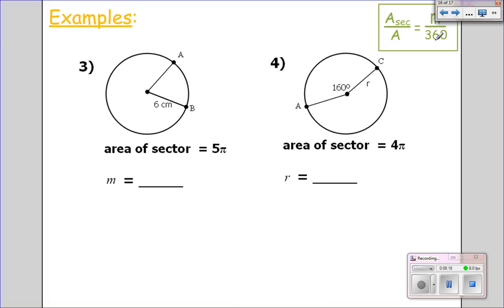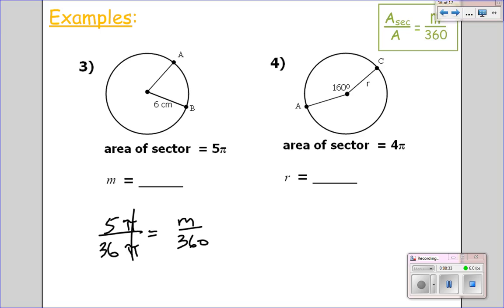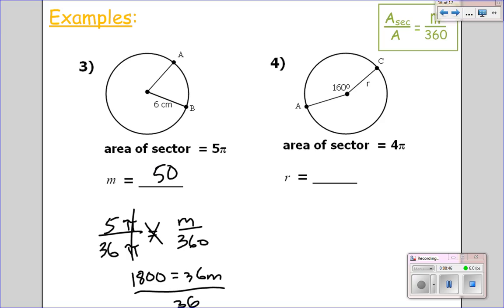Let's try two more where we work backwards. The area of the sector is 5 pi, so 5 pi over total area — radius is 6, so 6 squared is 36 pi — equals the unknown angle over 360. Pi's cancel. Cross multiply: 1800 equals 36 times the angle. Divide by 36 on both sides, and I get that the angle in the center is 50 degrees.